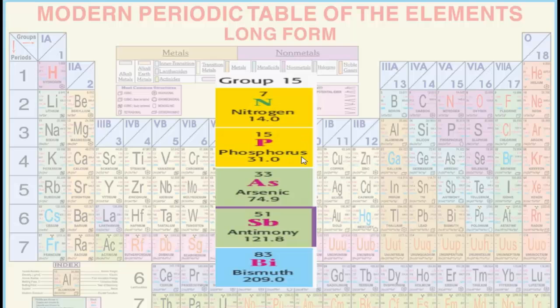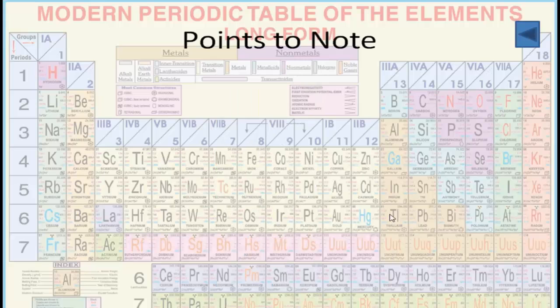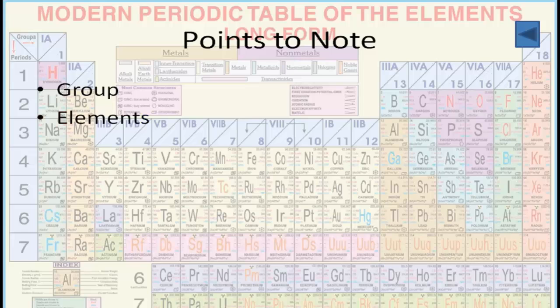Now friends, let's understand some points regarding this group. The group is the fifteenth group of the modern periodic table which is situated on the right side of this table. Who are the elements? Elements are nitrogen, phosphorus, arsenic, antimony, and bismuth.